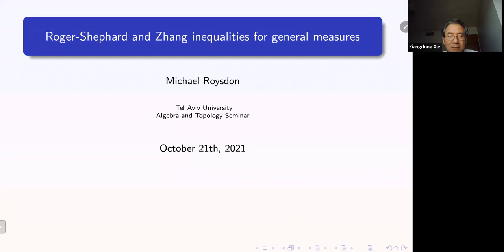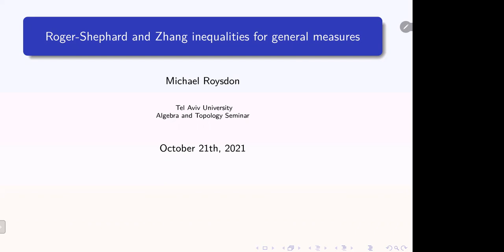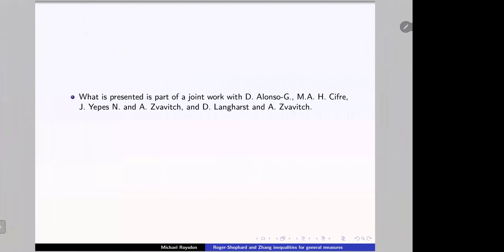So Michael Neusen, today we will speak about Rogers-Shephard and Leipzig inequalities for general measures. Thank you for the invitation and the chance to speak. The point of the talk will be twofold: geometric in nature and analytic in nature. The Rogers-Shephard and Jung inequalities serve as reverse forms of important inequalities in the field of convex geometry — one which is concave in nature and one which is isoperimetric in nature.